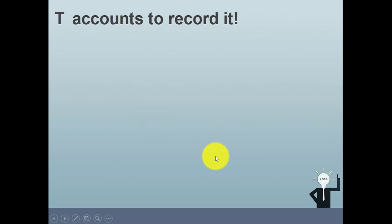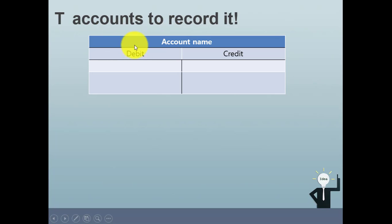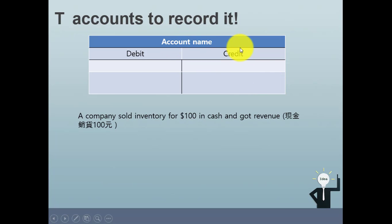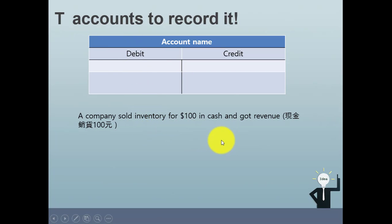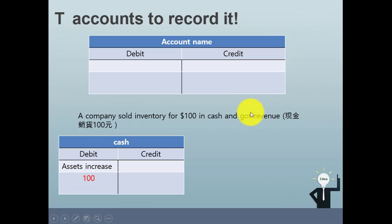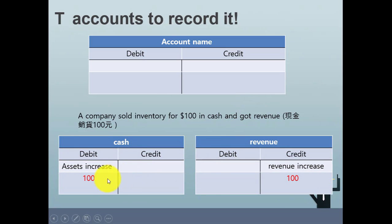Before we write down the entries, we will use accounts to record them. Each account will have a name and debit/credit columns to report the decrease and increase amounts. For instance, when a company sold inventory for $100 in cash, you will have cash increase and revenue increase at the same time. Cash increasing goes to the debit side, and revenue increasing goes to the credit side, so both sides show $100.